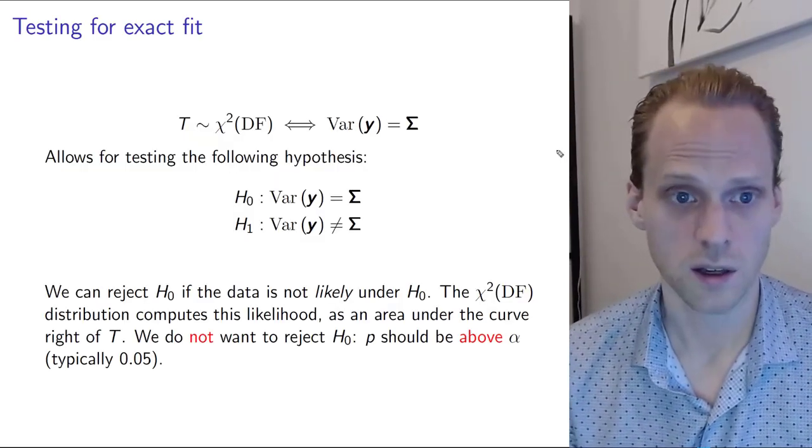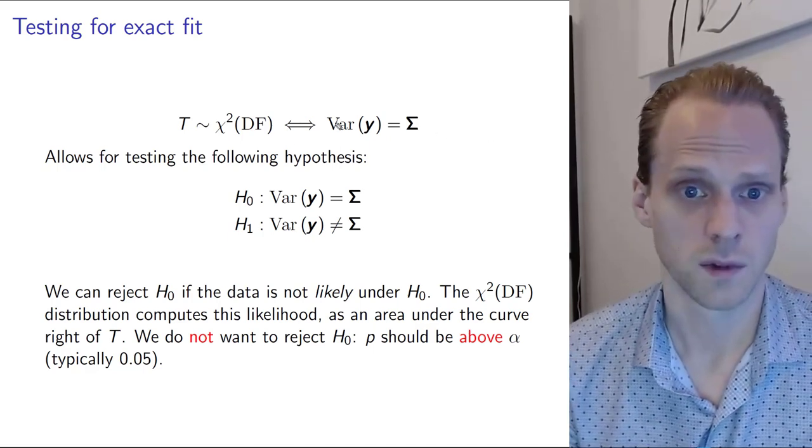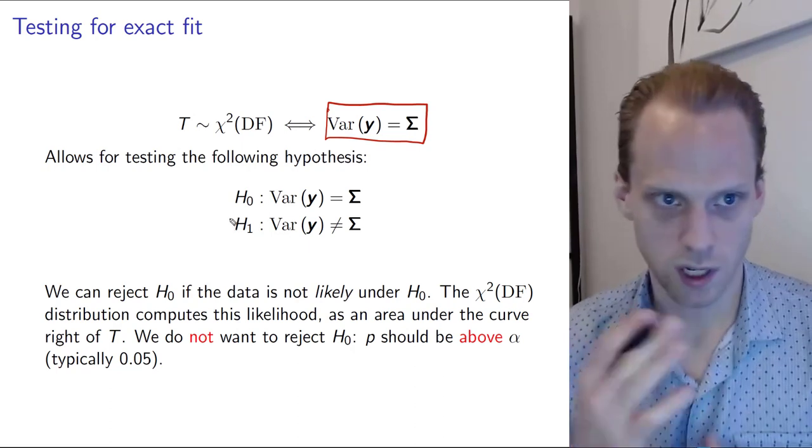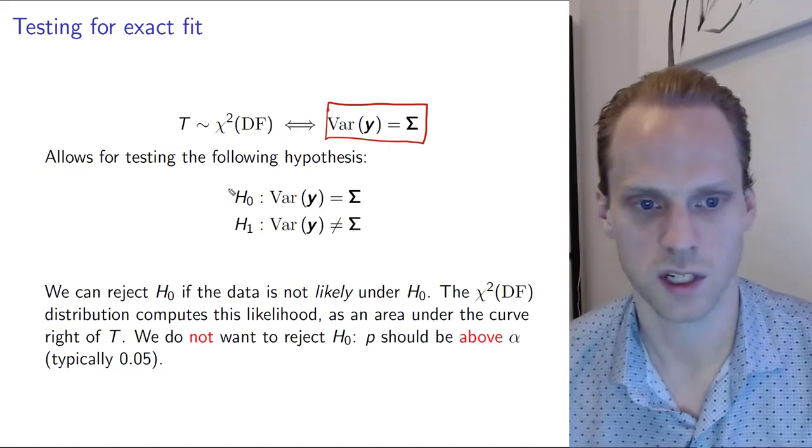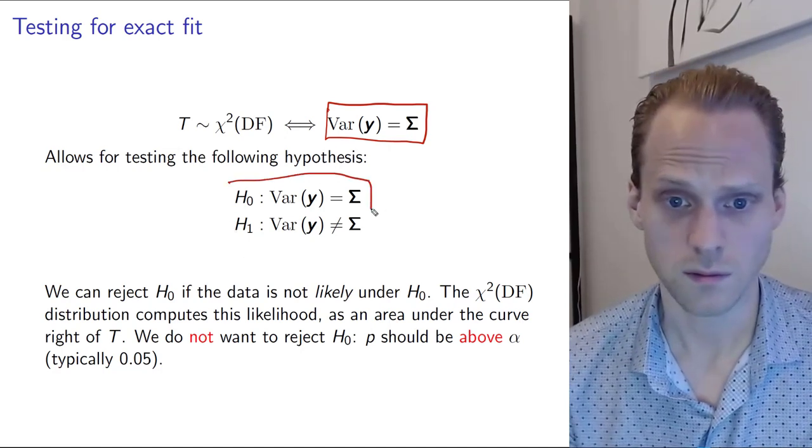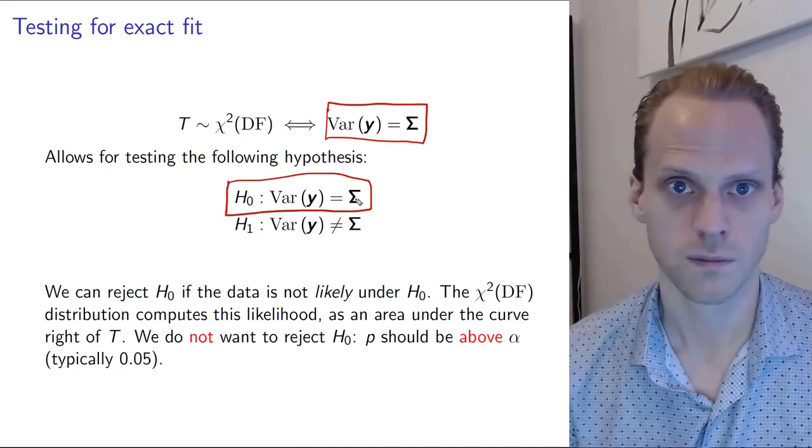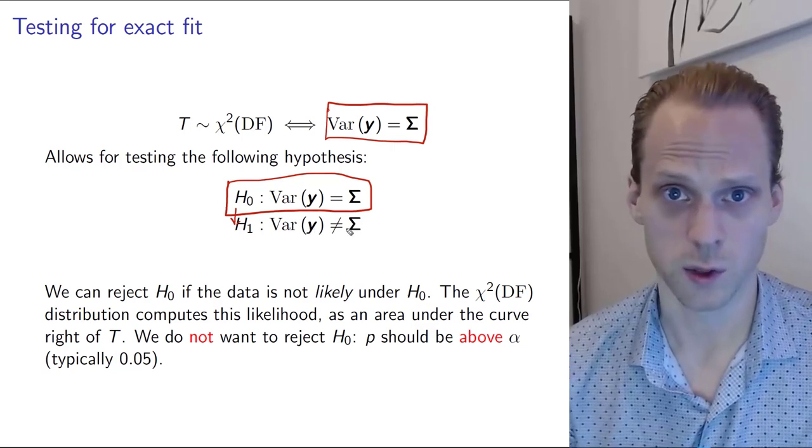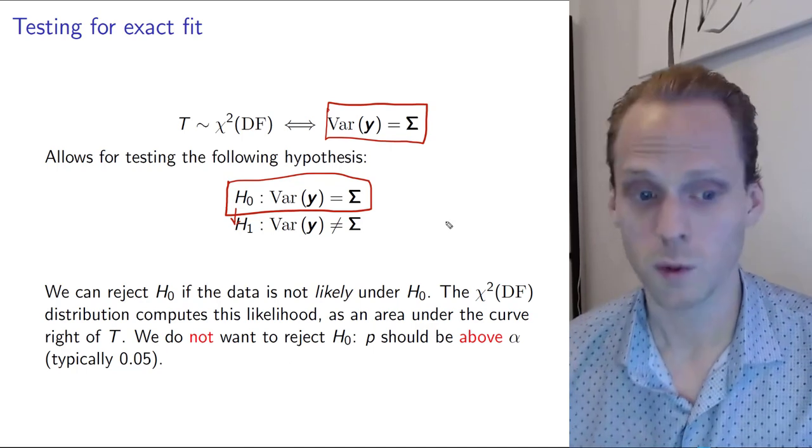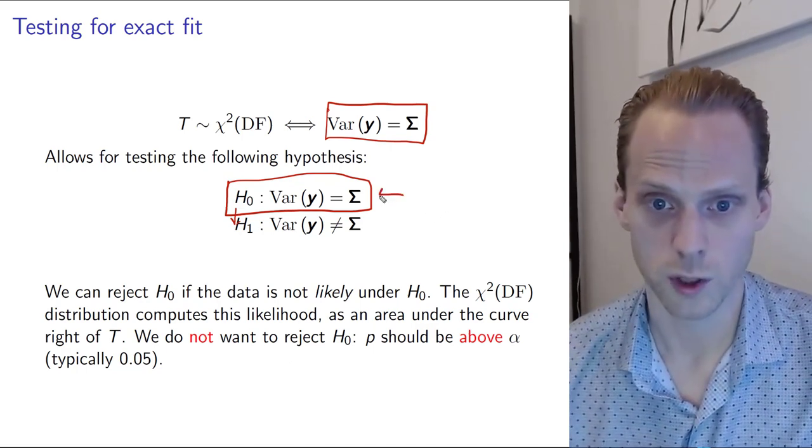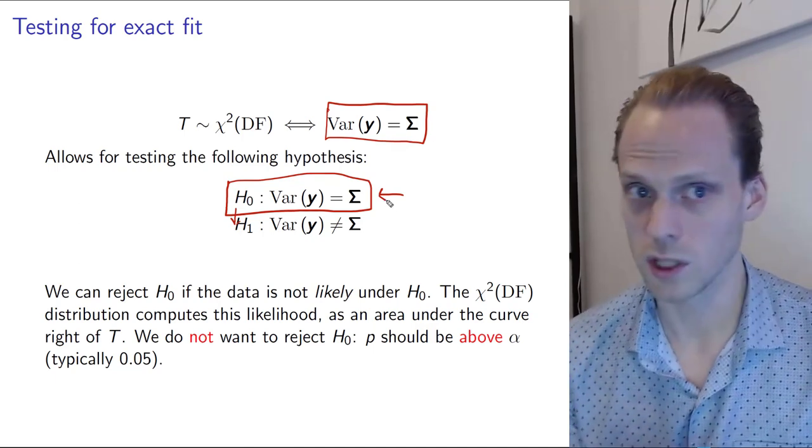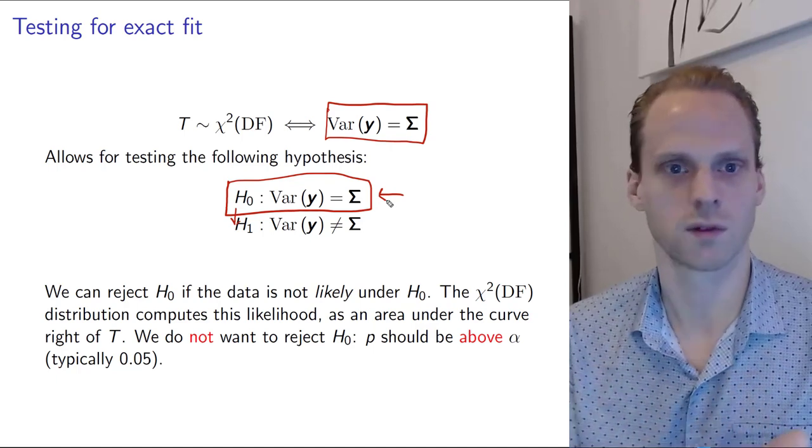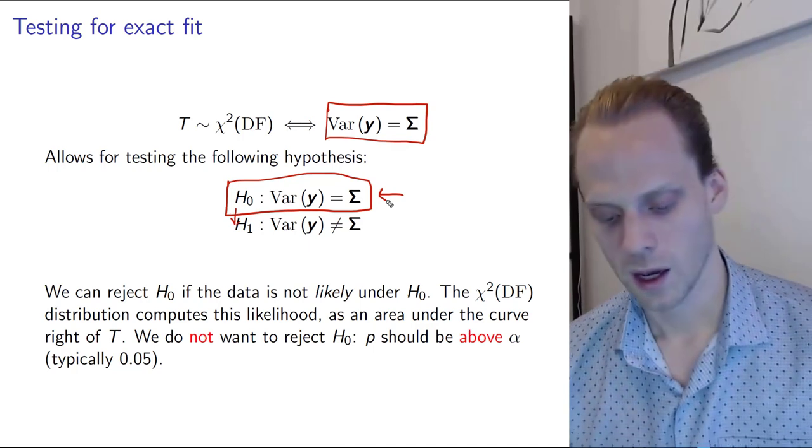With this test statistic, we can test the hypothesis that the variance of y equals sigma. In fact, we can try to reject this hypothesis. It's a bit of an inverse way of thinking than you normally do with significance testing. Our H0 is that the variance of y equals sigma, and we can try to reject that with the alternative hypothesis that the variance of y is not equal to sigma. Actually, we don't want to reject our hypothesis. It's inverse thinking than you normally do with a t-test where your hypothesis is the null test where an effect is zero. Now we're testing if the effect is what we found.